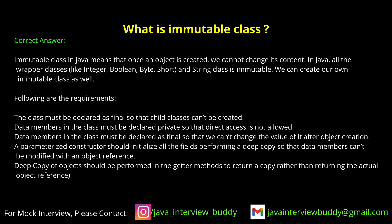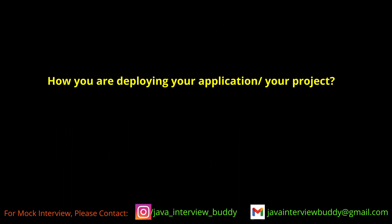An immutable class is one where you cannot change the properties of the object. String is immutable — you cannot change its value. When you assign a new value, it creates a new instance of that variable and points to the new address in memory, rather than modifying the existing one.